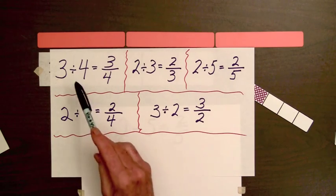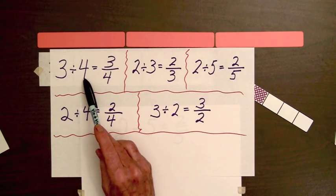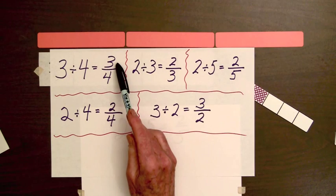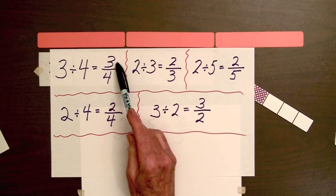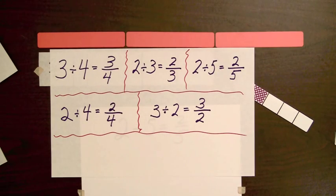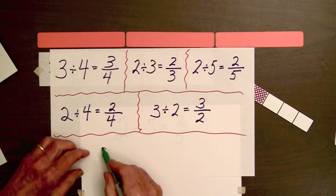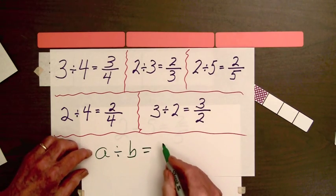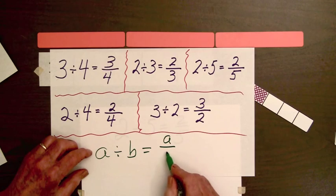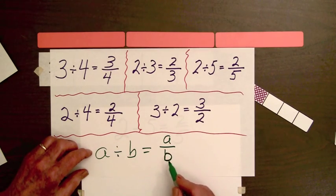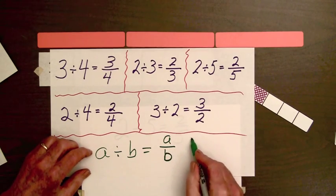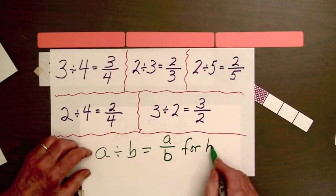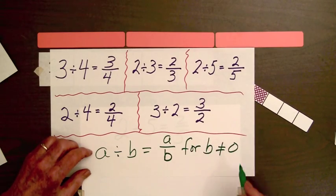When one whole number is divided by another, the resulting fraction has the first whole number as the numerator, and the second whole number as the denominator. The general statement can be written as a divided by b equals a over b, the fraction a over b, for b not equal to zero.